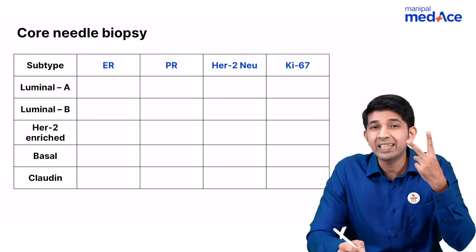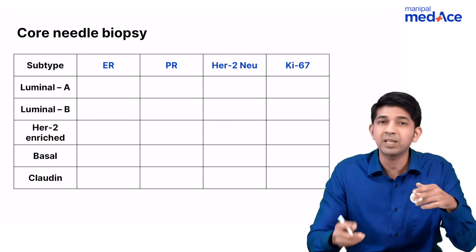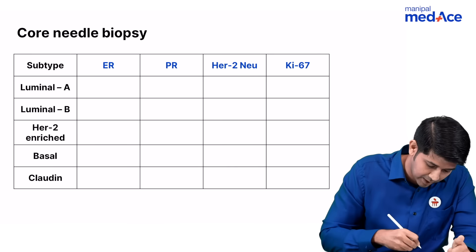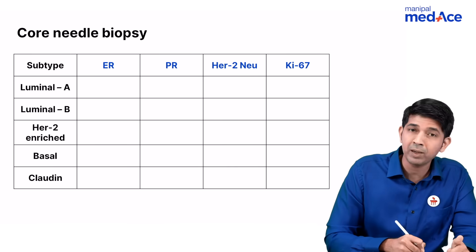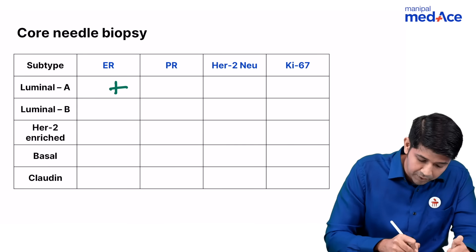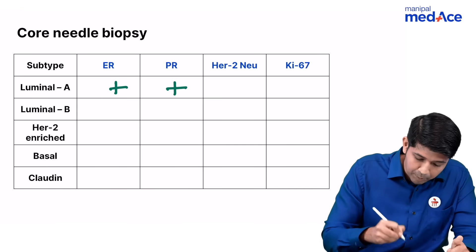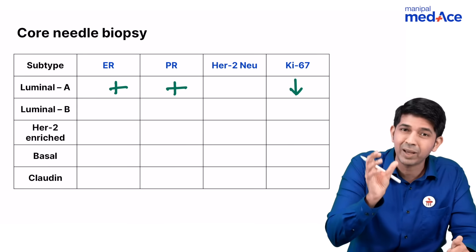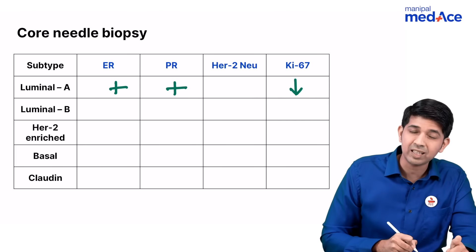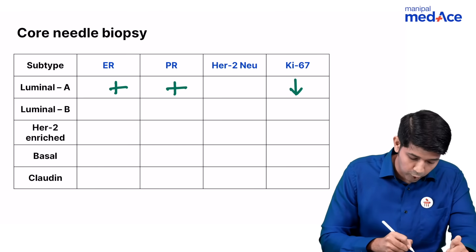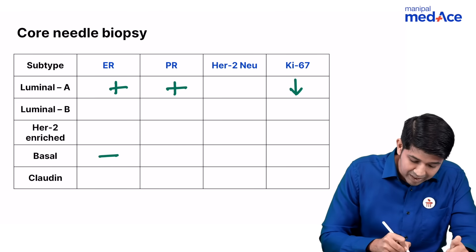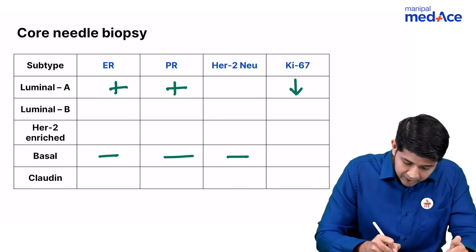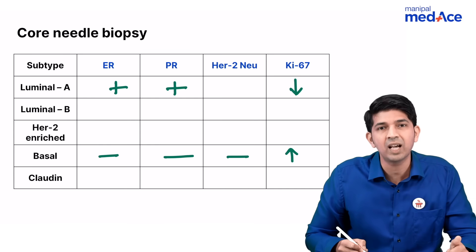You need to know only two subtypes and the rest you can use a little bit of mixing and matching to get the answer. Remember, Luminal A is ER positive, PR positive, and Ki67 level is very low. The Basal subtype is the other one you need to know — it is a triple negative subtype, meaning everything is negative and Ki67 is high.